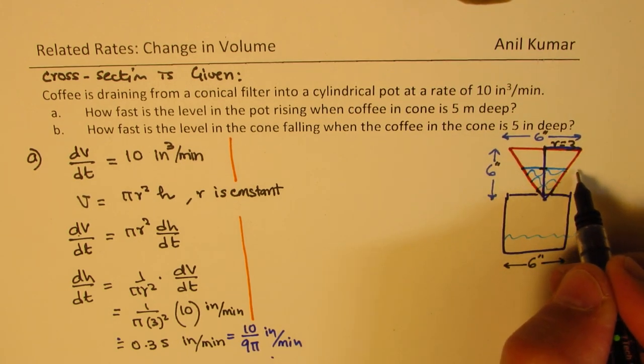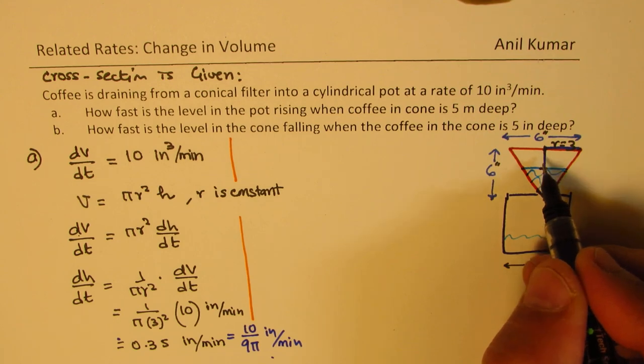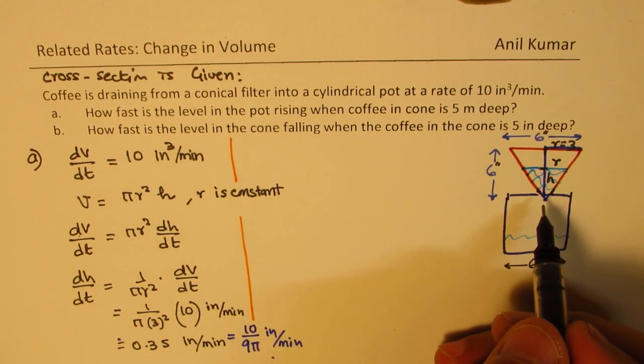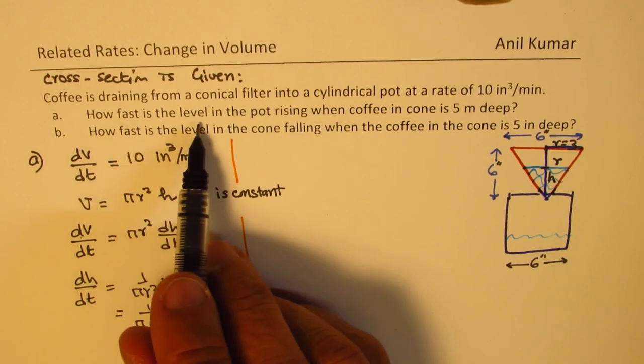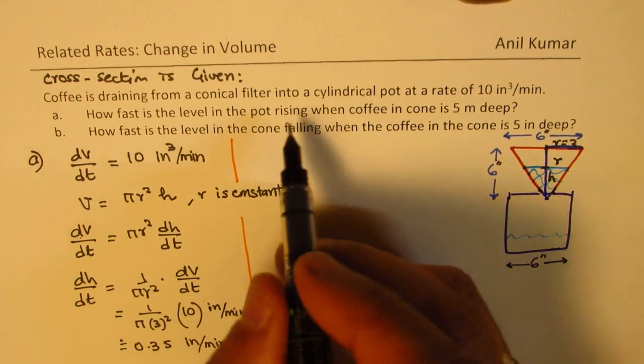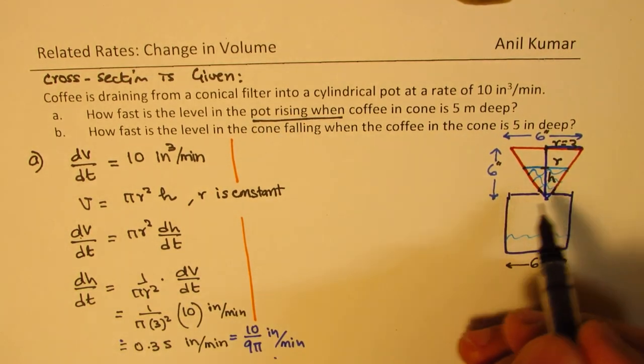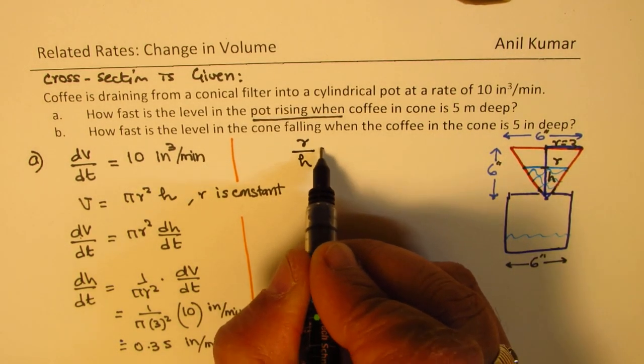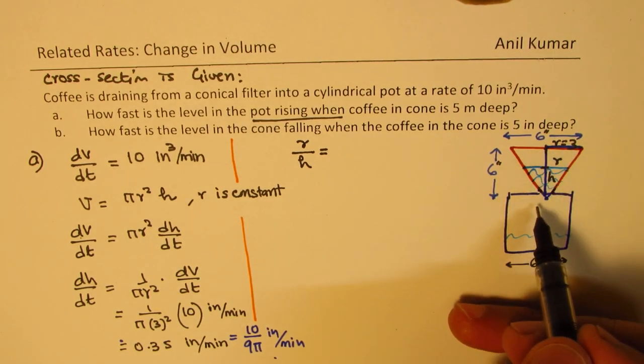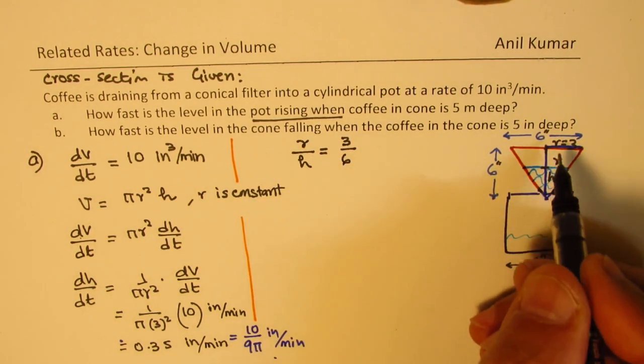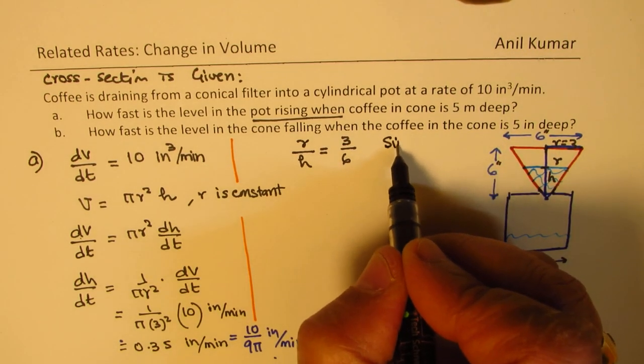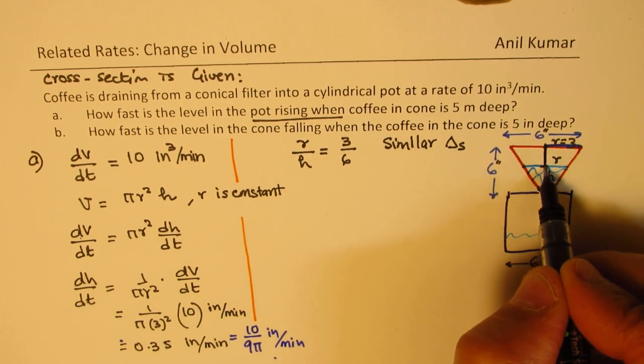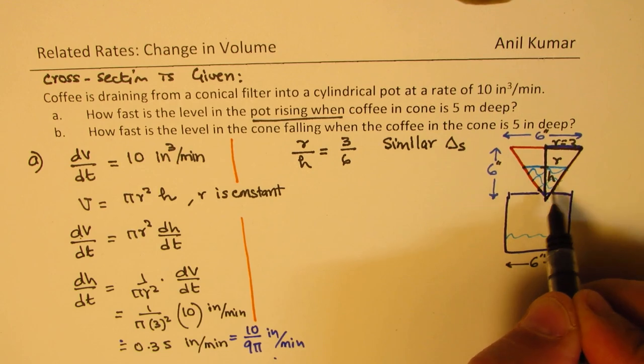In this particular case, let's say when it is 5 inches up, then at any instance, let's take height is h and r is the radius. Since we want to find how fast is the level in the pot rising, we are interested in height. So we can always say that radius over height is equal to radius 3 and height 6 from similar triangles. So this big triangle is similar to the smaller triangle.